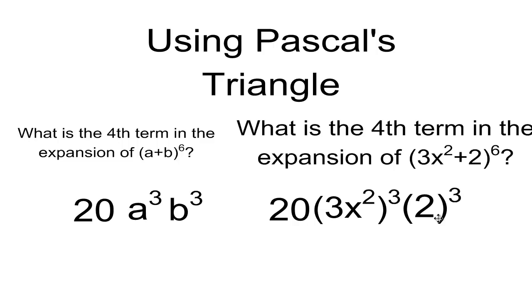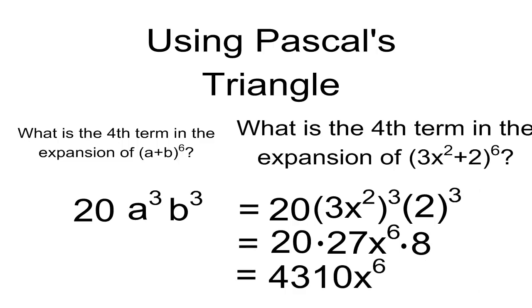Now it's a simple matter of simplifying this expression. And so doing my exponents first, 20 times 3 cubed is 27. And then x squared cubed is x to the exponent 6, remembering my exponent rules. And then 2 cubed is 8. And when I finish the math on that it becomes 4,310 x to the exponent 6.